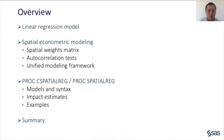This tutorial is organized as follows. We will start with a brief introduction to the classical linear regression model and explain why it fails to model spatial data. Building on this, we will introduce spatial econometric modeling, covering key points including spatial weight matrix, autocorrelation tests, and a unified modeling framework. Then, we will introduce two SAS procedures for spatial econometric modeling: PROC C SPATIAL REG and PROC SPATIAL REG. Examples will be presented to demonstrate the syntax and usage of these two procedures. Lastly, we will conclude with a summary.